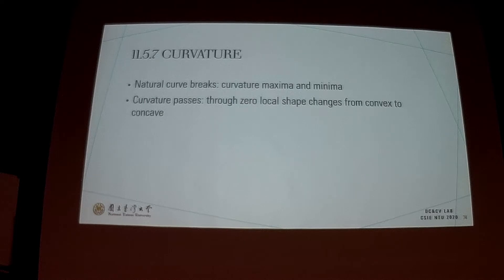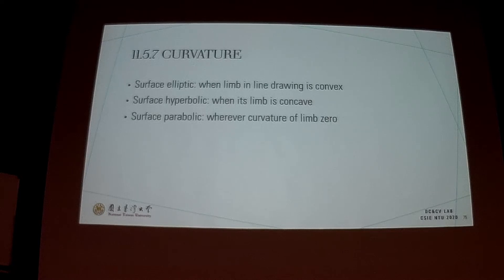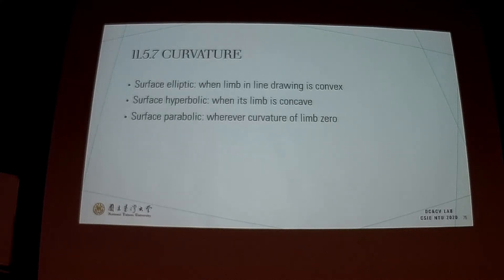The curve vector can be divided into natural curve vector maxima and minima, and curve vector passes through zero where local shape changes from convex to concave. For curvature types: surface elliptic is when the limb in the line drawing is convex; surface hyperbolic is when the limb is concave; surface parabolic is wherever the curvature of the limb is zero. Based on those equations we can define the curve vector.